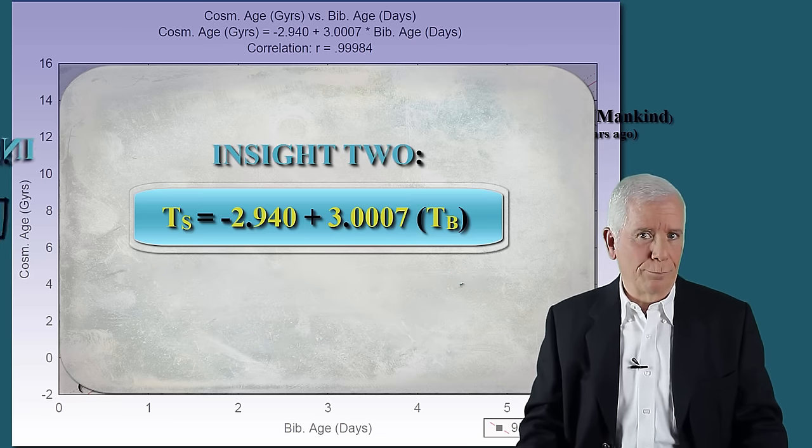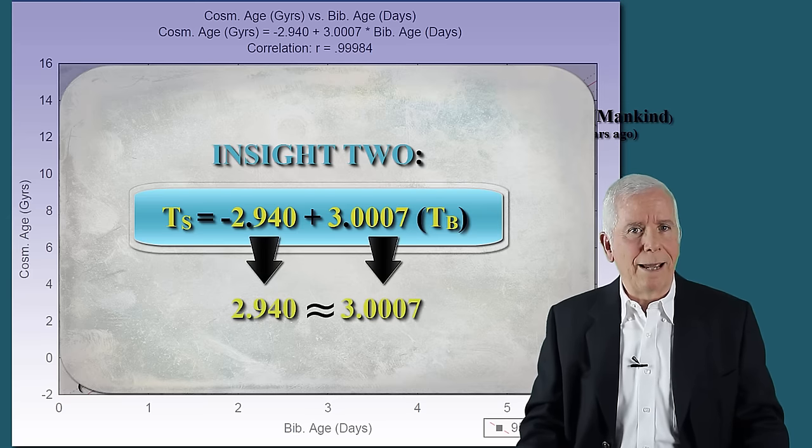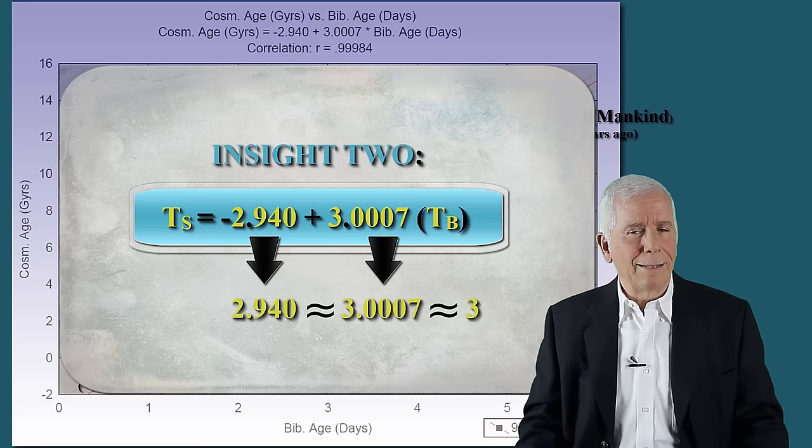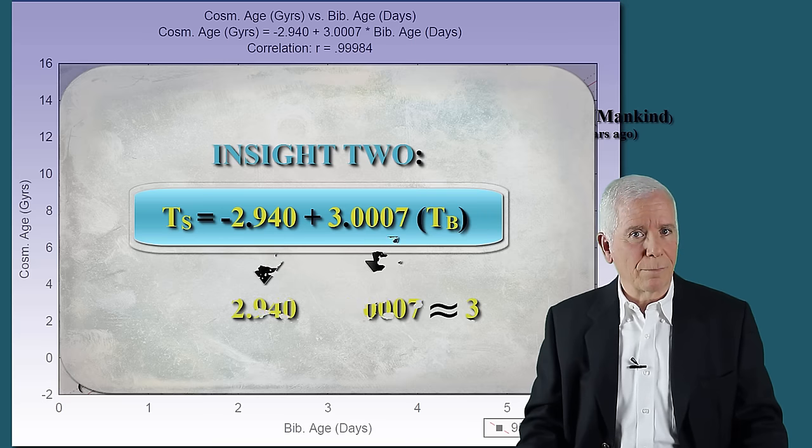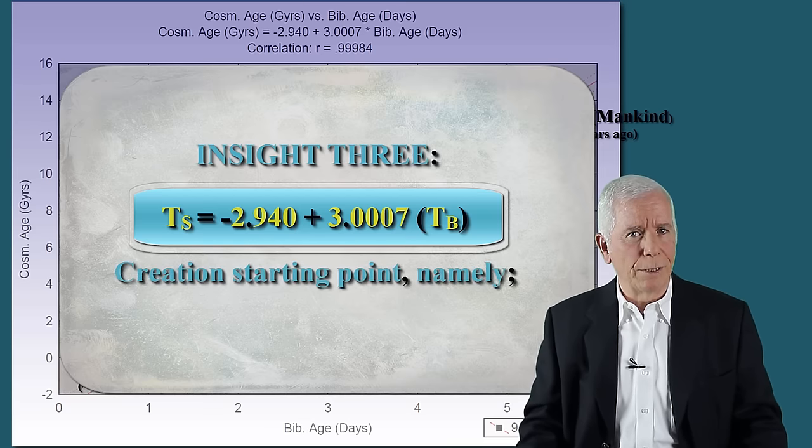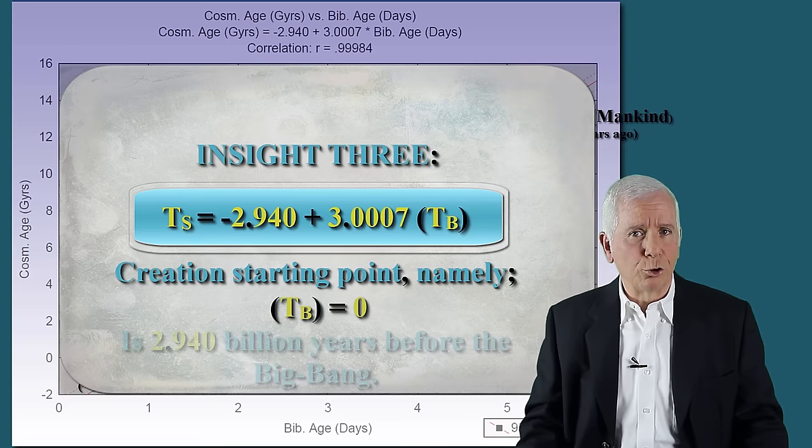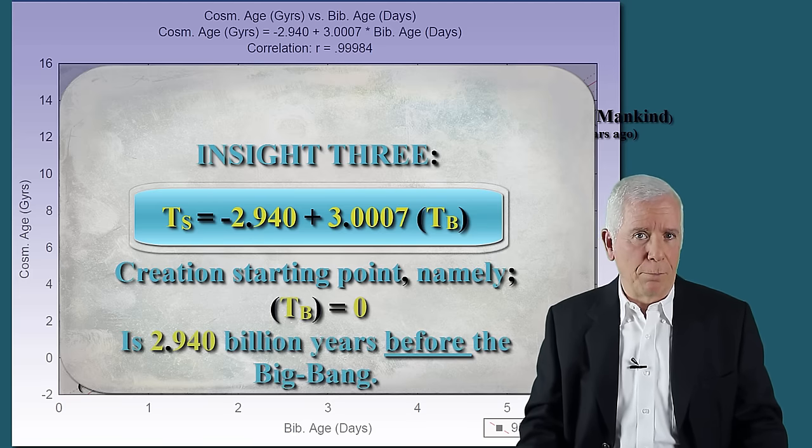Insight two. The two numbers that appear in the equation are nearly identical and equal to three. This is probably not coincidental, which leads us to the third insight. Insight three. The equation shows that creation starting point, namely, Tb equals zero, is 2.940 billion years before the Big Bang.